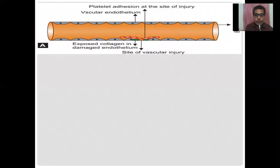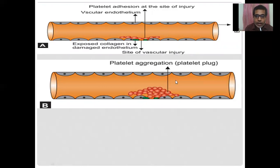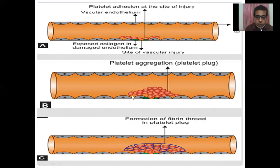In this figure, the site of vascular injury is shown, where exposed subendothelial collagen attracts platelets. Platelets adhere to the exposed collagen at the site of injury, then activated platelets attract nearby platelets forming a platelet aggregate — the primary hemostatic plug. This primary plug is then strengthened by the formation of fibrin threads through the process of coagulation, forming the definitive or secondary hemostatic plug.